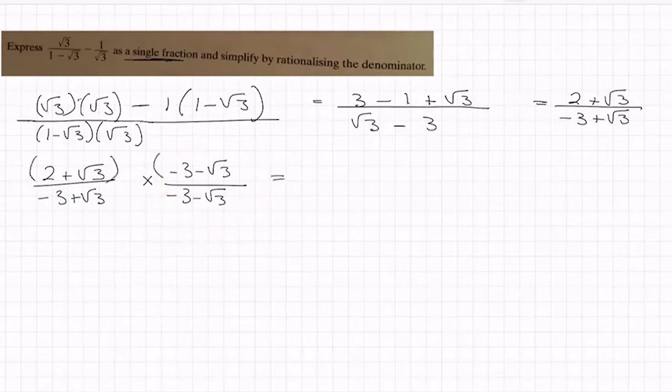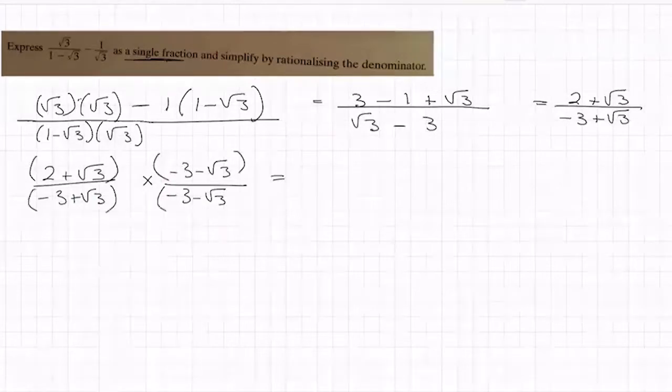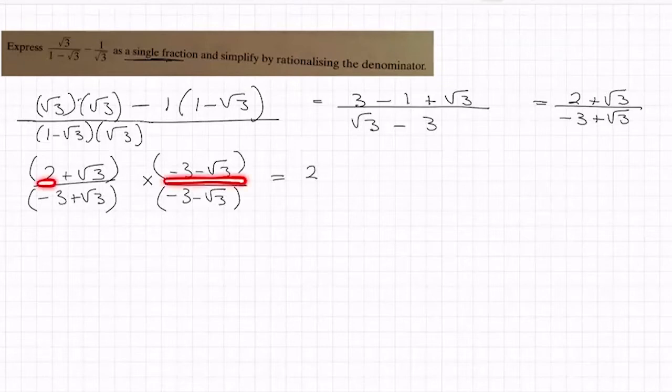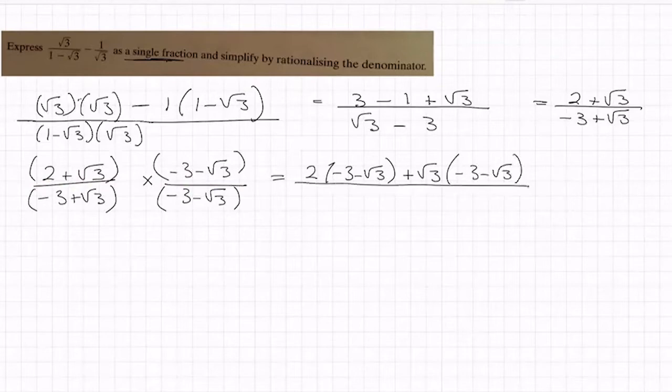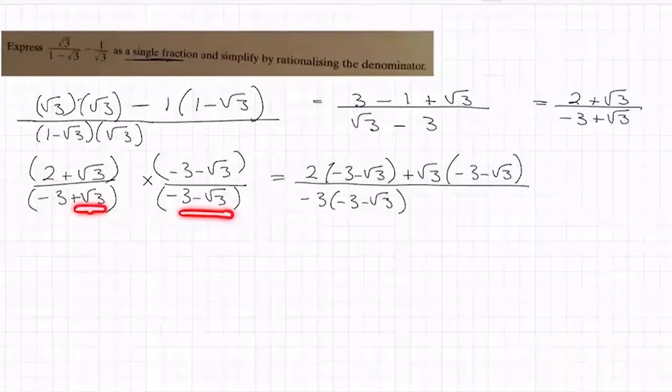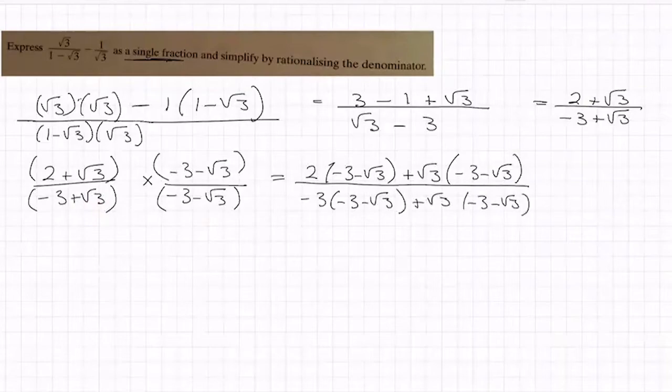So it becomes a long multiplication. You can write it out as 2 by everything in the second bracket, plus √3 by everything in the second bracket, over, split the first bracket again, minus 3 by everything in the second bracket, and then go back for the plus √3 by everything in the second bracket.